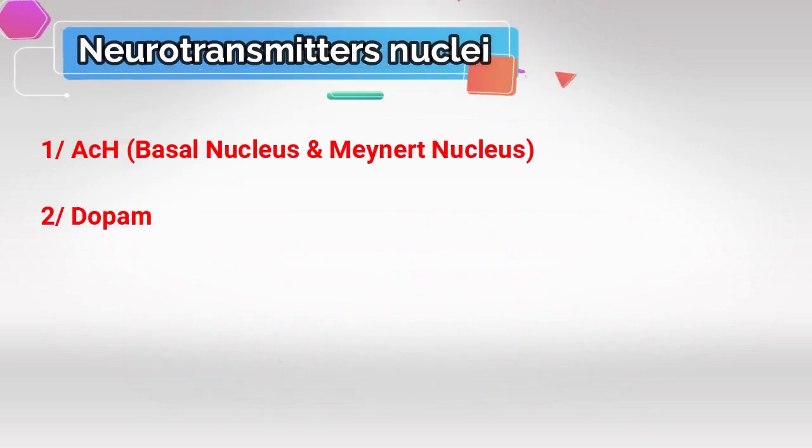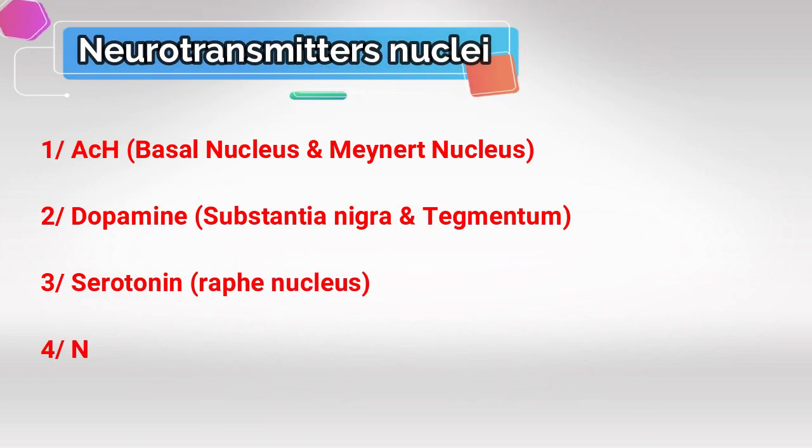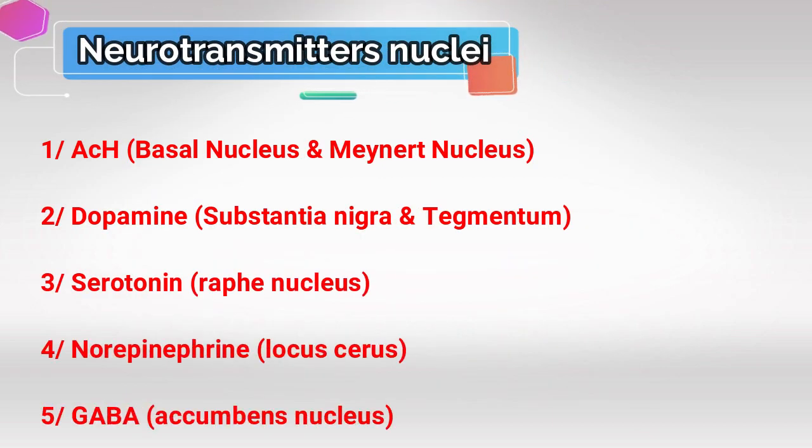You'll also have to know the synthesizing nucleus of the following substances. For example, serotonin is mostly synthesized in the Raphe nucleus, and norepinephrine is mostly synthesized in the Locus Coeruleus nucleus. These are very, very important.